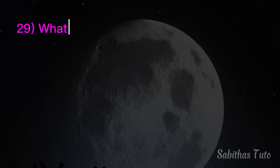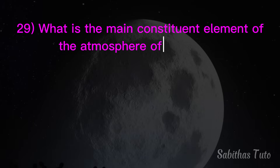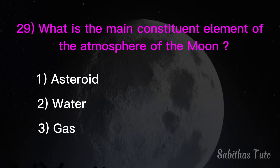Twenty-ninth question. What is the main constituent element of the atmosphere of the moon? The answer is gas.